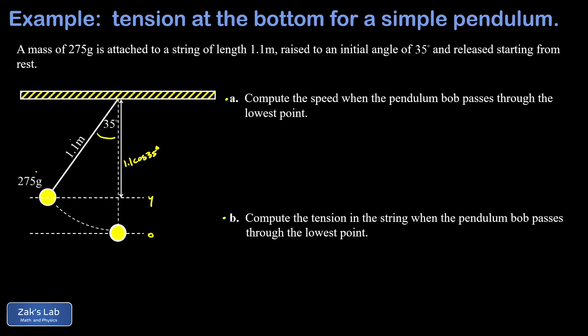So that leg is 1.1 cosine 35. Then I realized that the distance from the attachment point all the way down to the pendulum bob in its lowest state, that's simply the length of the string, or 1.1 meters. And that means my initial height Y is simply the difference, 1.1 minus 1.1 cosine 35.